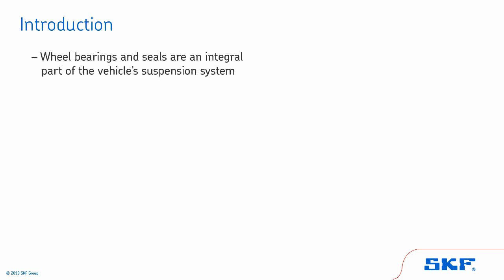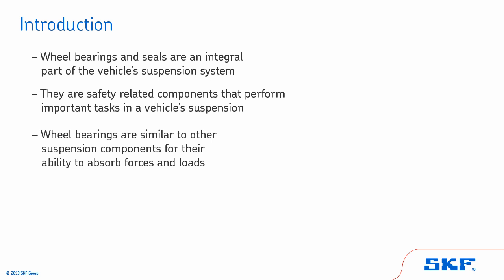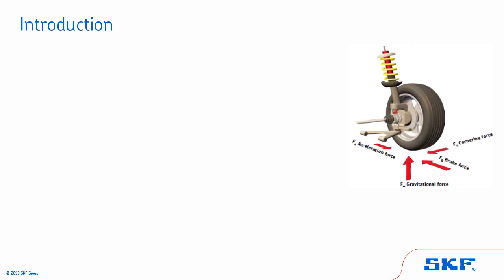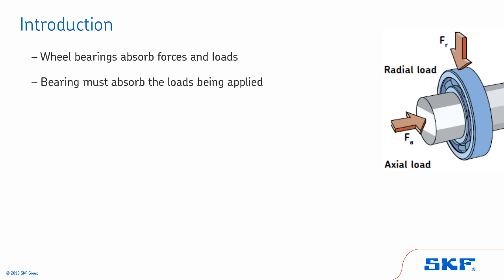Wheel bearings and seals are an integral part of the vehicle suspension system. They are safety-related components that perform important tasks. Wheel bearings are similar to other suspension components in their ability to absorb wheel forces and loads. The forces acting on the tire and wheel assembly result in loads being applied to the wheel bearing, which must absorb them. The bearing allows the wheels to rotate with minimal friction and also supports the vehicle's weight.